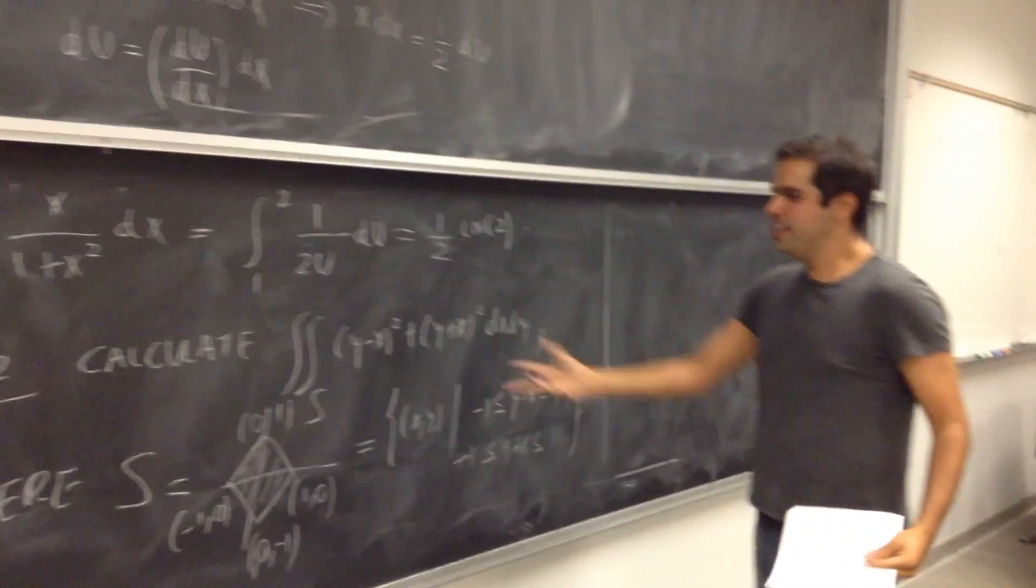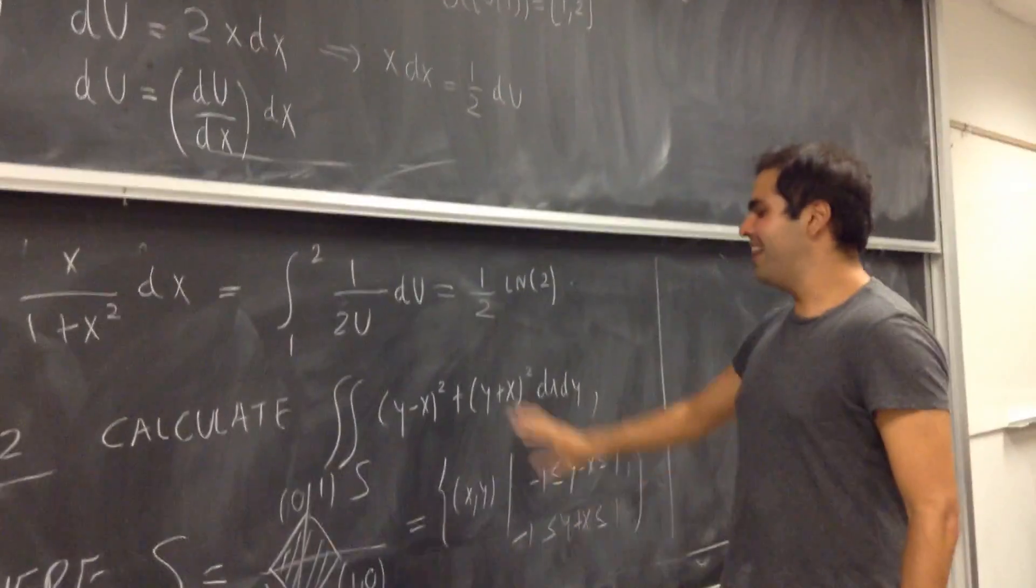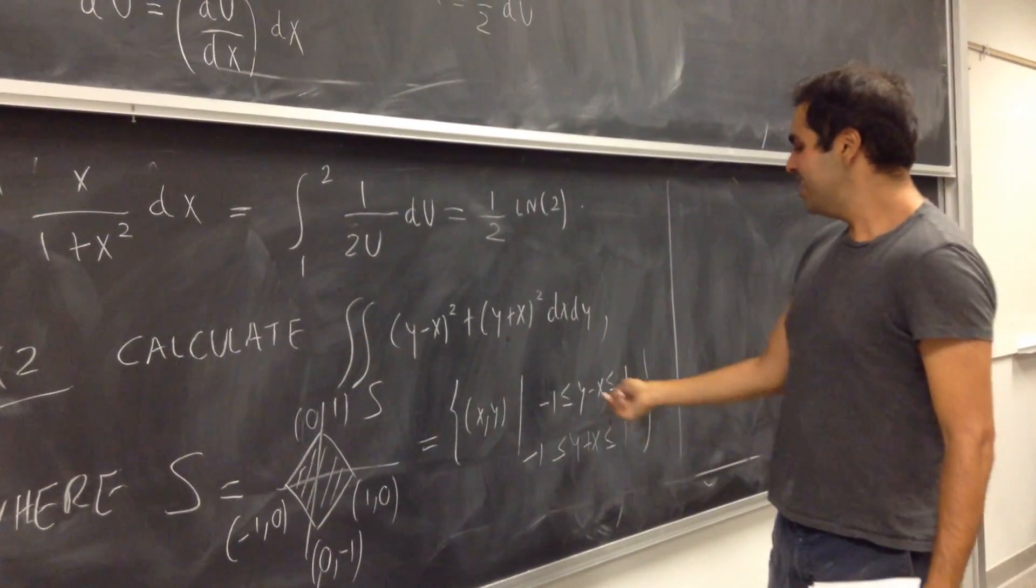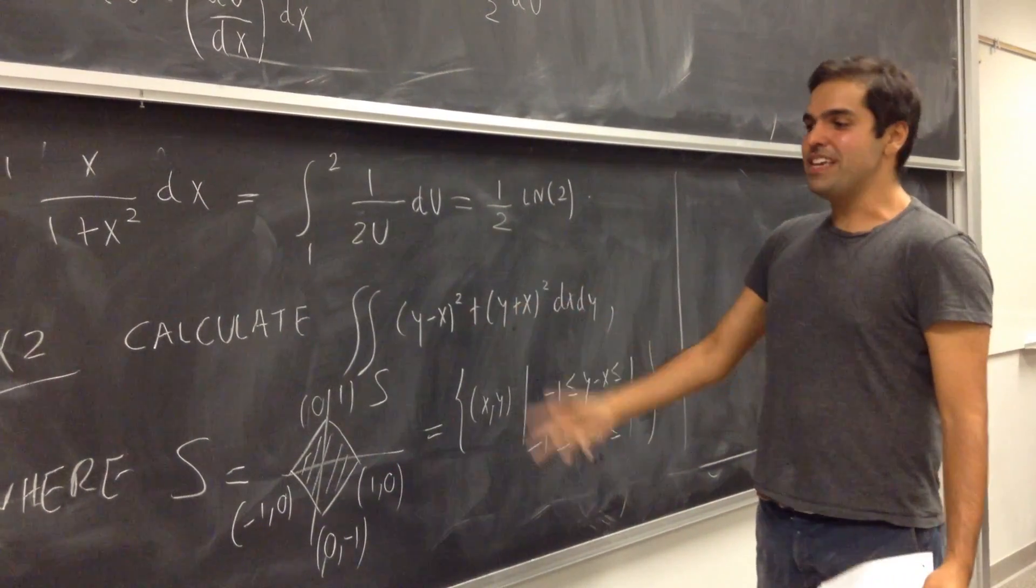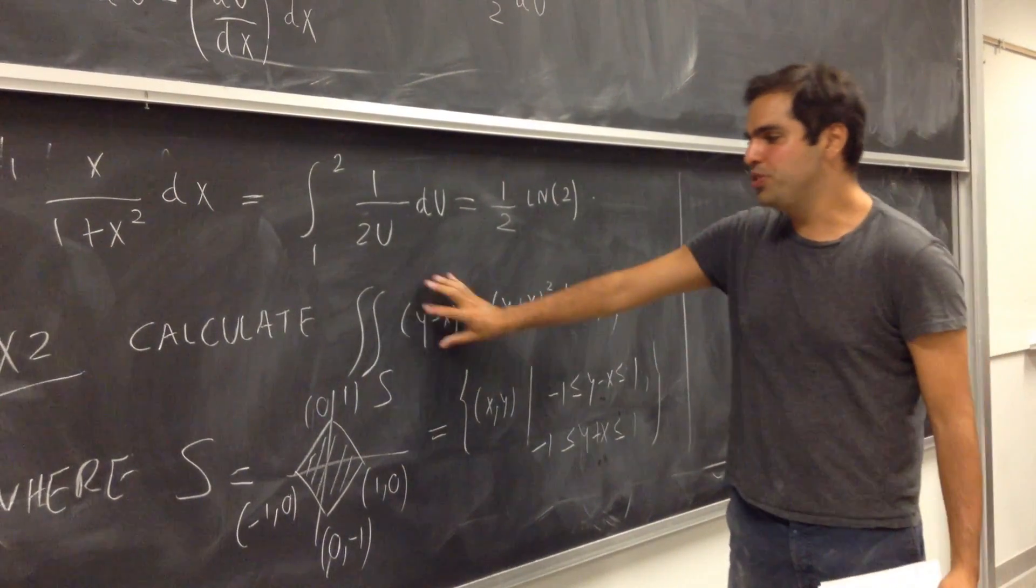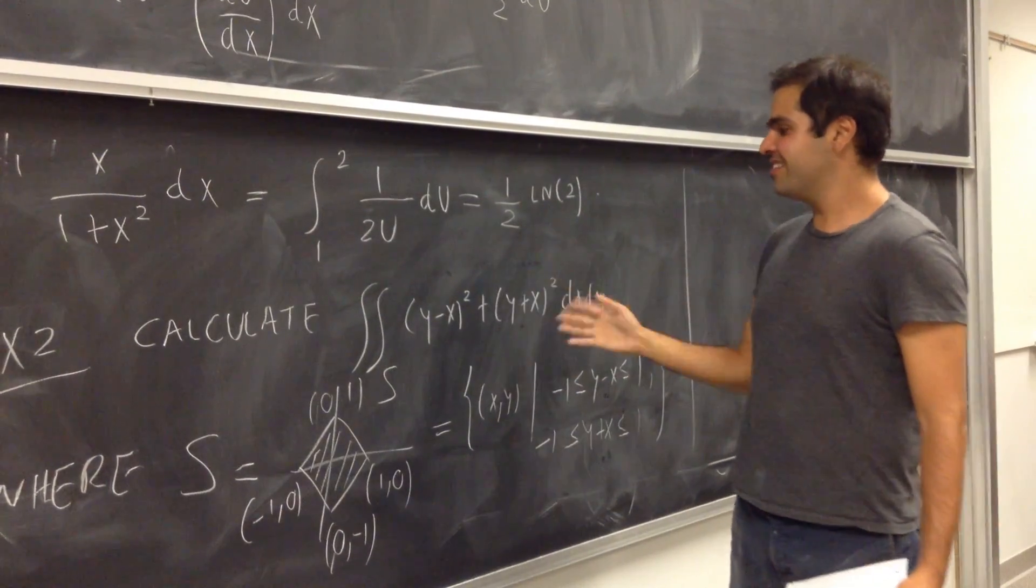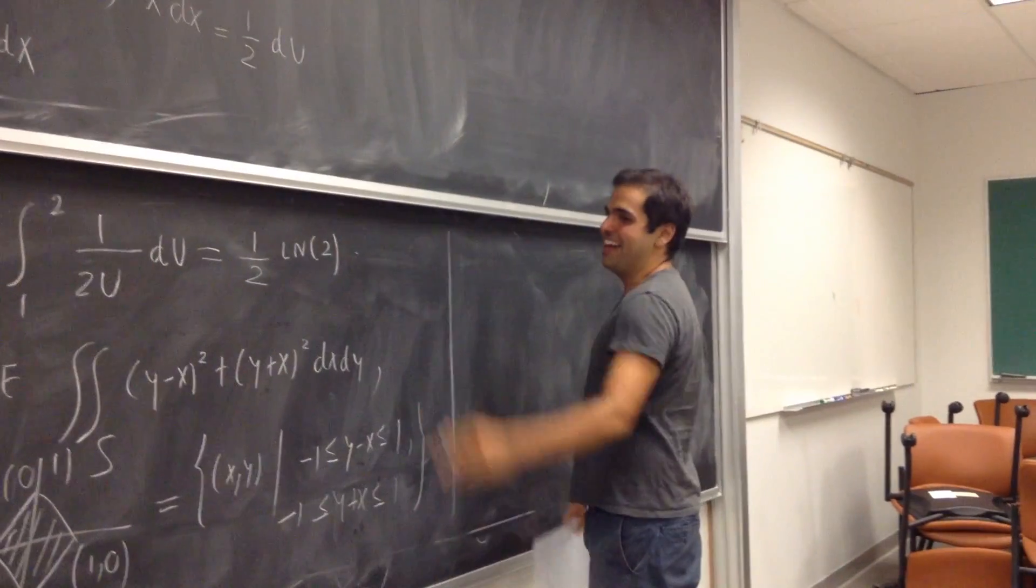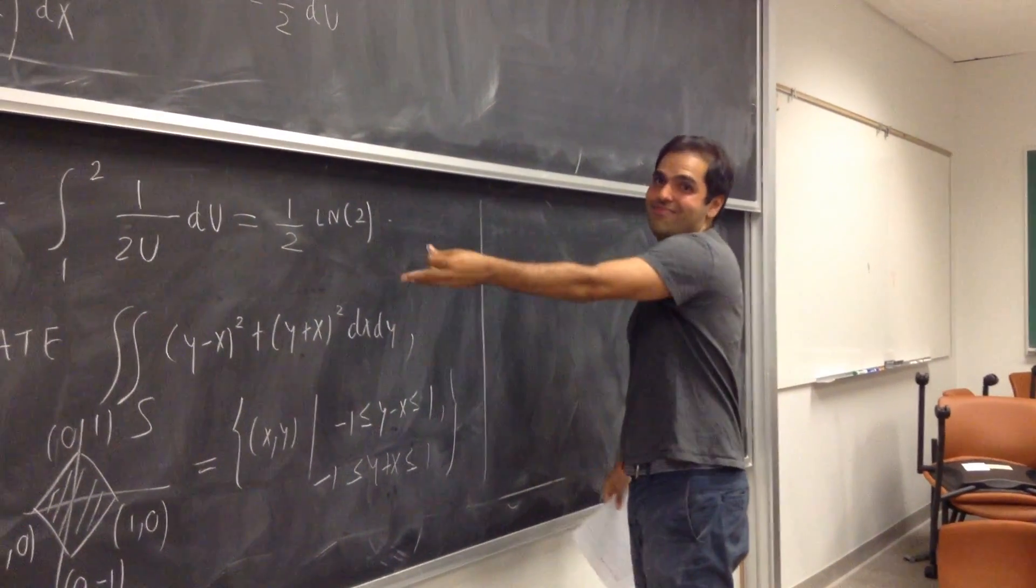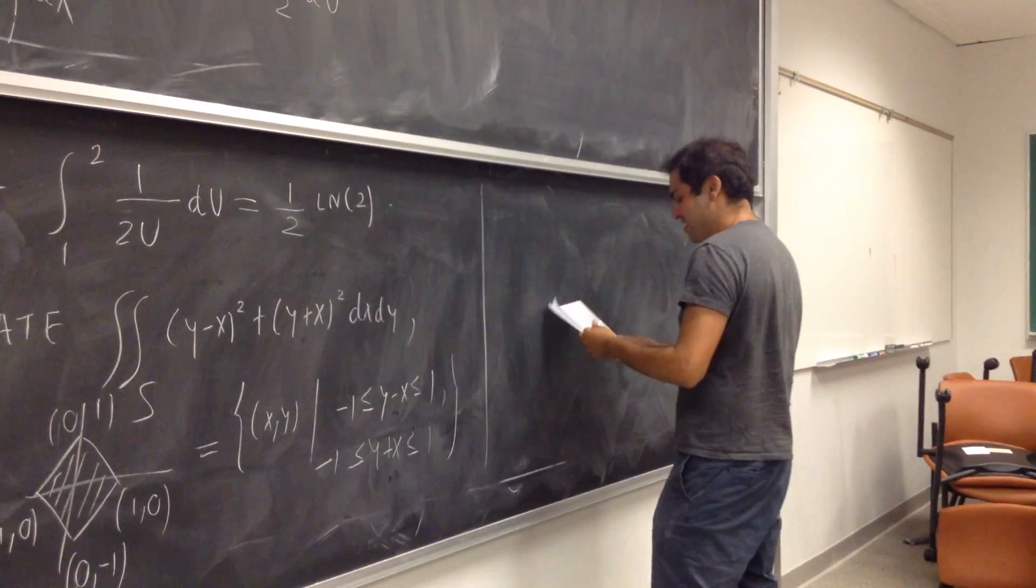Alright, well, notice, this involves a y minus x, a y plus x, which also appear here and here, so maybe it's a good idea to use u equals to y minus x and v to be y plus x. I know, so clever, but I kinda made this example based on this change of variables.